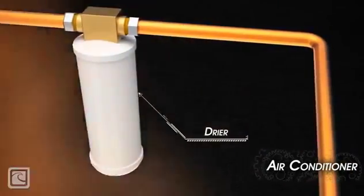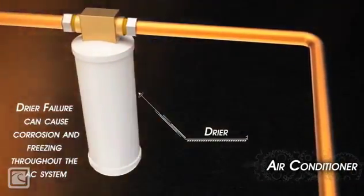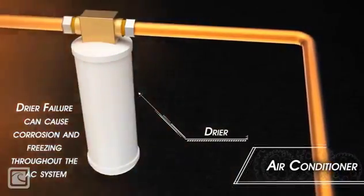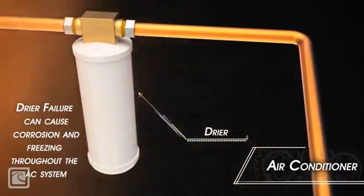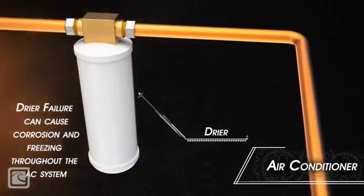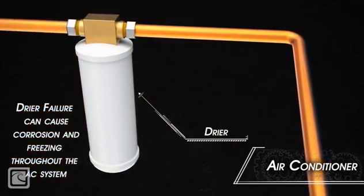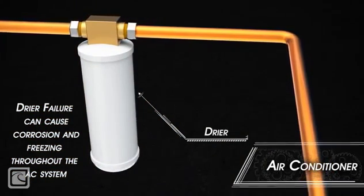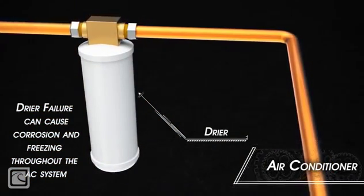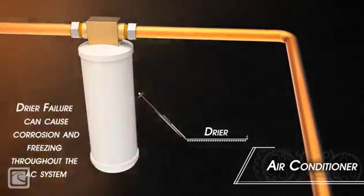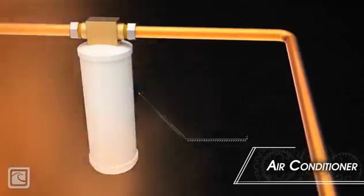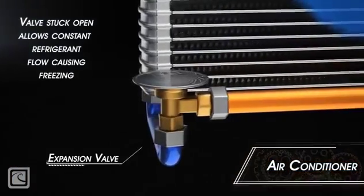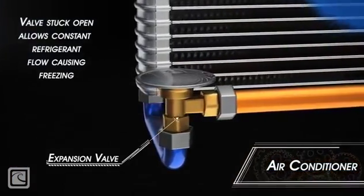The dryer removes moisture from the refrigerant circulating in the air conditioning system. If the desiccant in the dryer is plugged or full of moisture, the dryer can fail and the AC system can corrode from the inside, or the moisture in the AC system can freeze.